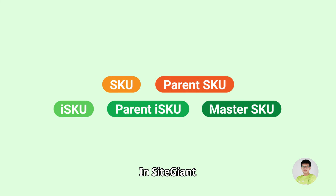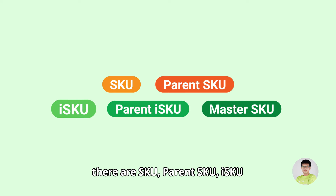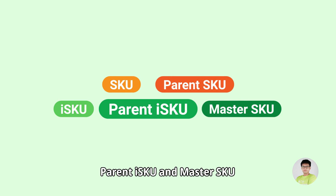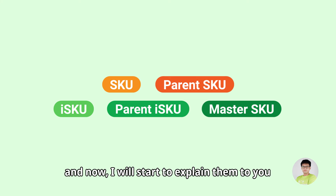In SiteGiant, there are SKU, Parent SKU, ISKU, Parent ISKU, and Master SKU. And now I will start to explain them to you.